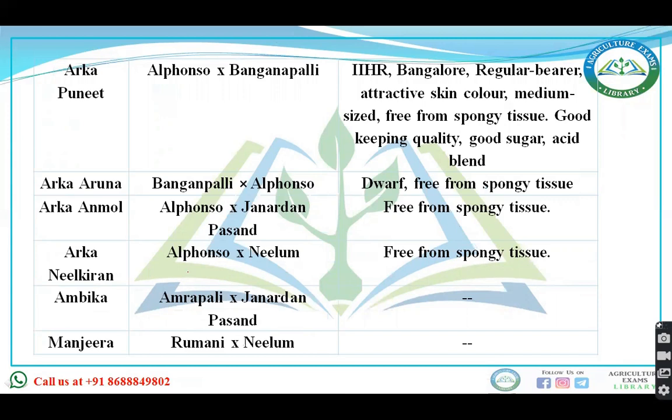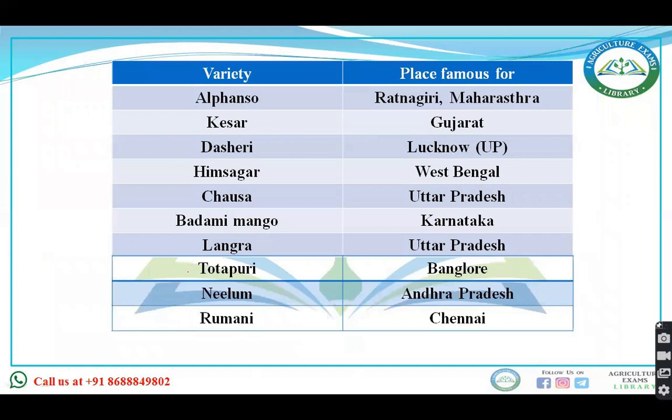Arka Puneet is an Alphonso variety. Arka Bengalpali was developed at IIHR Bangalore, from Aruna and Alphonso — it is free from spongy tissue. Arka Ramol is Alphonso crossed into Janardhan Prasad, also free from spongy tissue. Arka Nil Kiran is Alphonso crossed into Nilam. Ampika is Amrapali crossed into Janardhan Prasad. Manjira is Romani crossed into Nilam.